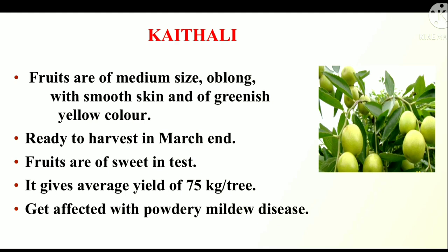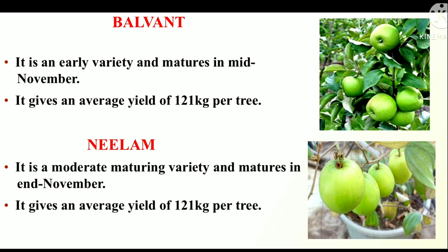Balwan. It is an early variety and matures in mid-November. It gives an average yield of 121 kg per tree. Now, Neelam. It is a moderate maturing variety and matures in end of November. It gives an average yield of about 121 kg per tree.